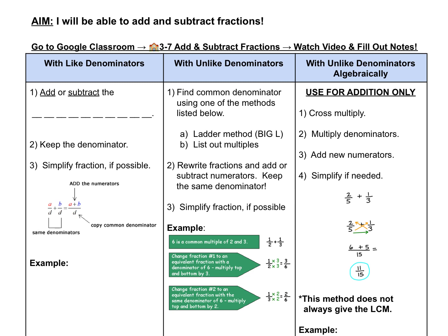So we're going to start with like denominators. When we add or subtract fractions that have the same denominator, what we do is we add or subtract the numerators first. We keep the denominator the same and simplify the fraction if possible. You can see here in this diagram this is just using letters instead of numbers, but let's take a look at an example.